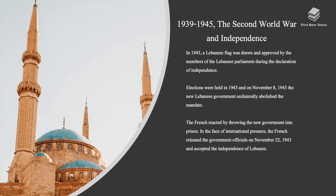In 1943, a Lebanese flag was drawn and approved by the members of the Lebanese Parliament during the Declaration of Independence. Elections were held in 1943, and in November 1943, the new Lebanese government unilaterally abolished the mandate. The French reacted by throwing the new government into prison. In the face of international pressure, the French released the government officials on November 22nd, 1943, and accepted the independence of Lebanon.